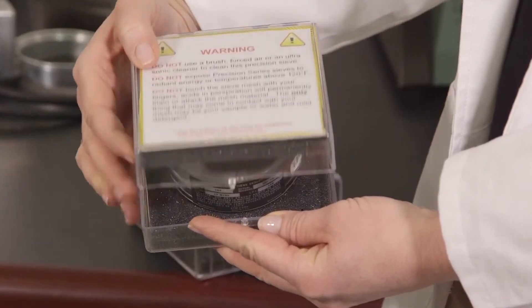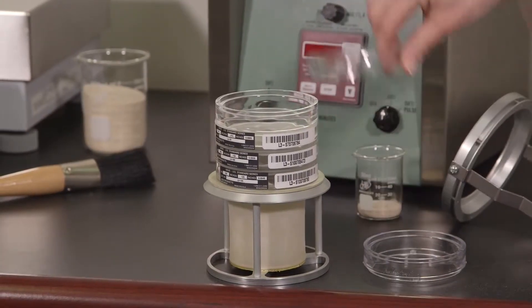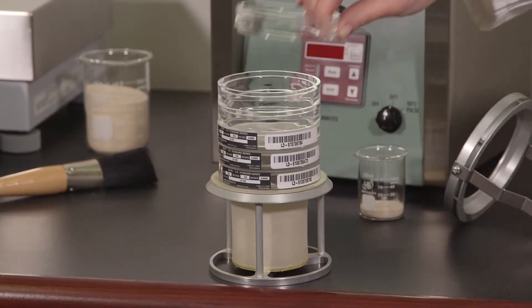For ease of sample viewing, align the sieves so the labels are all on one side. There is room for up to six standard series sieves, or three electroformed.